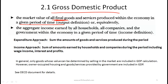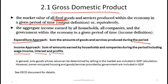Now there are also two approaches for actually calculating GDP. One is called the expenditure approach, where we simply sum the amounts of goods and services produced during the period. The second is called the income approach, where GDP is the sum of amounts earned by households and companies during the period, including wage income, interest, and profits. This means wages, dividend checks, and coupons on bonds are all included. Both approaches should give the same answer.